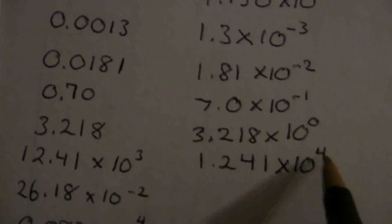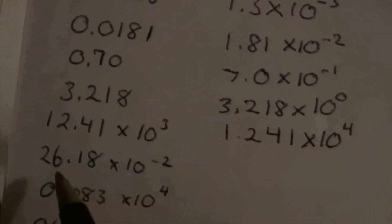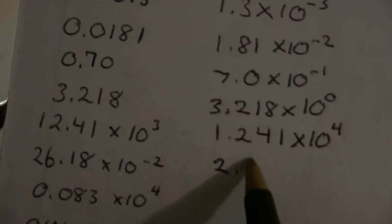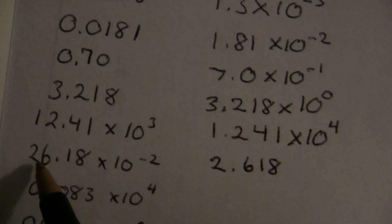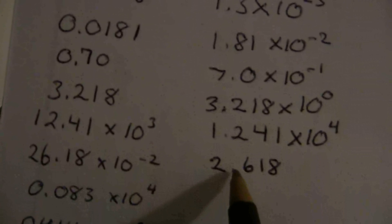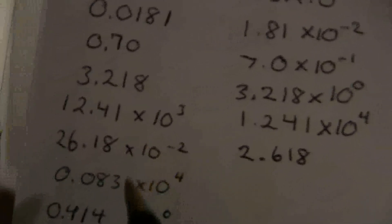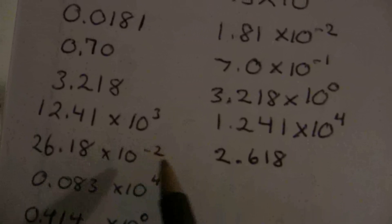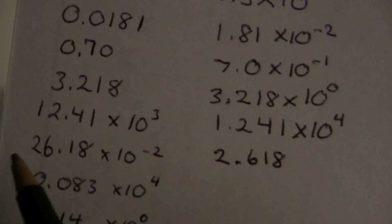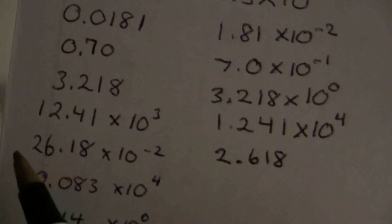Here, 2.618, putting it where it should go between the first after the first digit. And then instead of two places to the left, we only need to go one place to the left, so this will be times ten to the minus one.